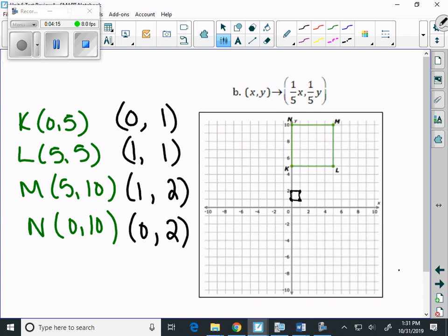I do want to label even though it's quite small. 0, 1 is our K. 1, 1 is our L. 1, 2 is our M. And 0, 2 is our N.